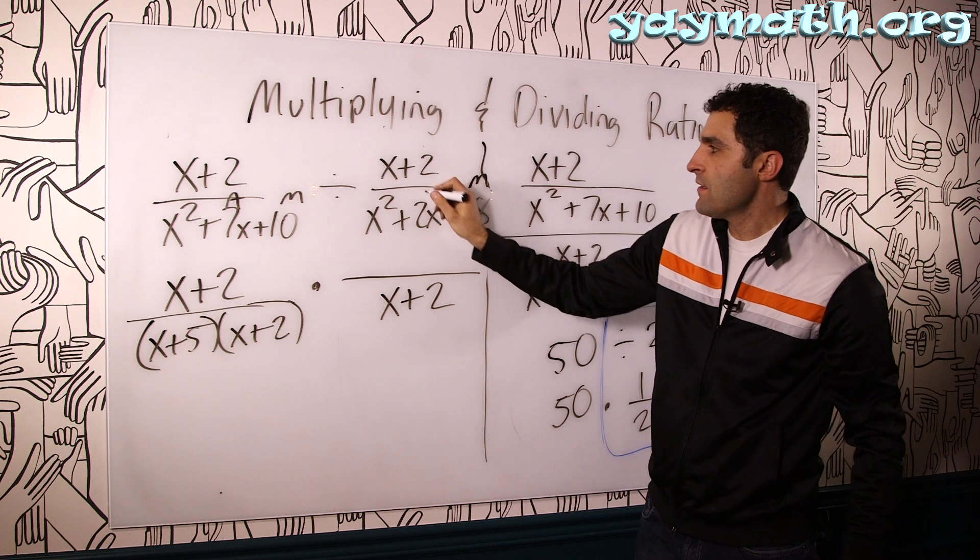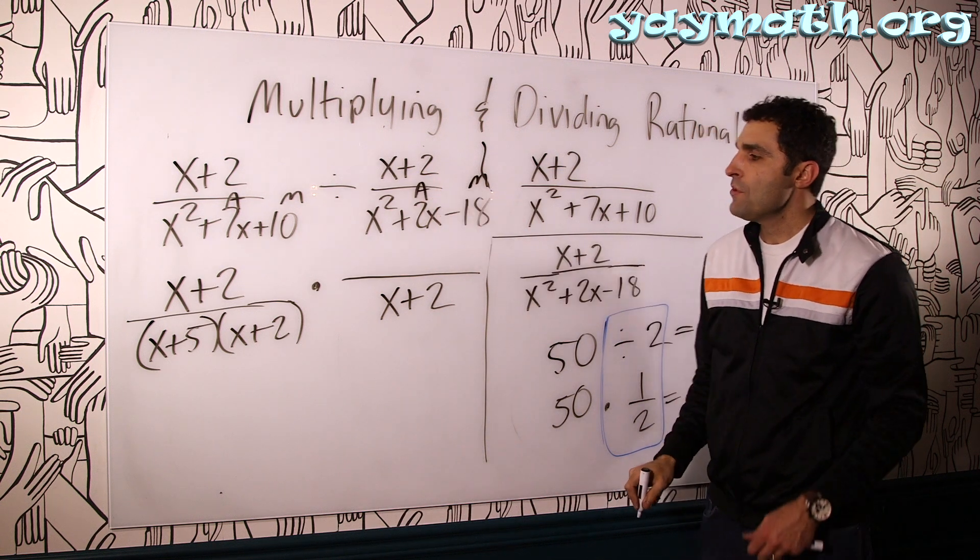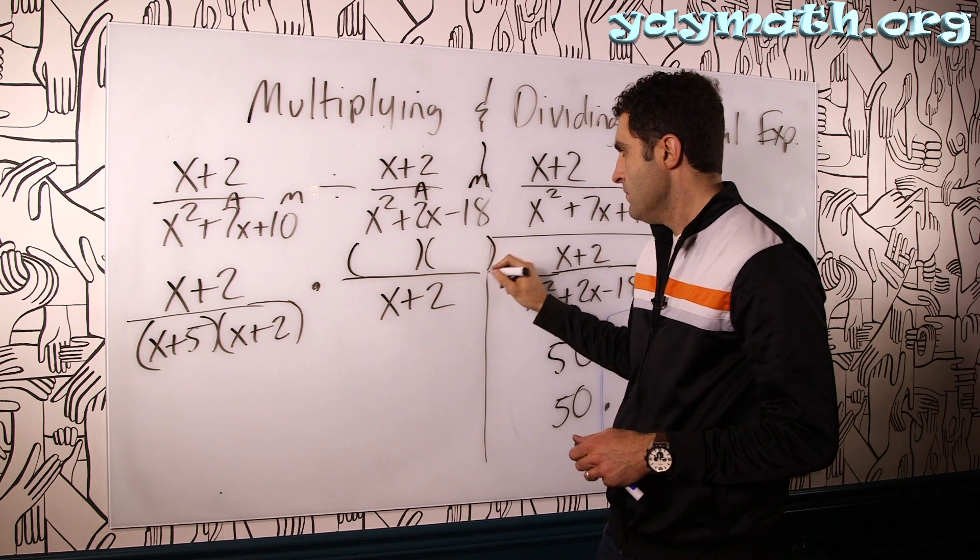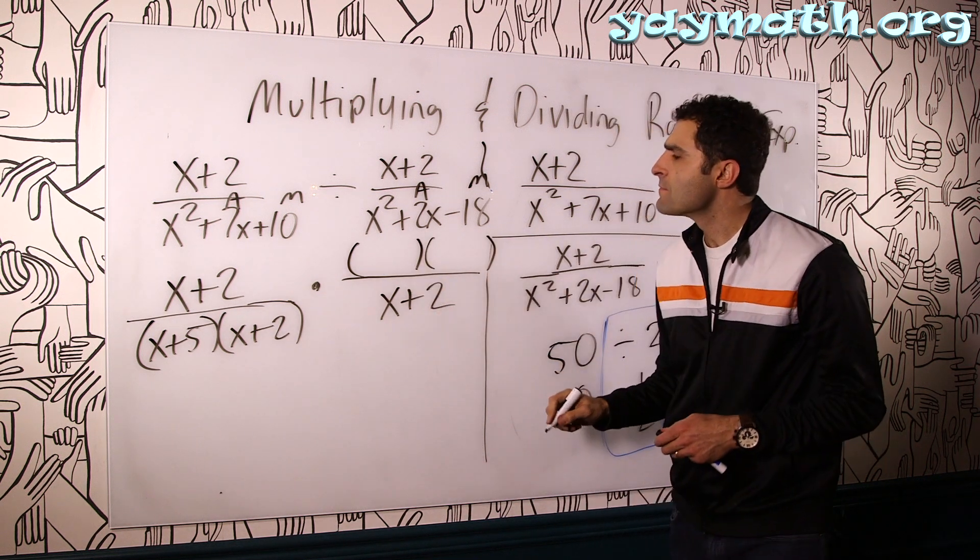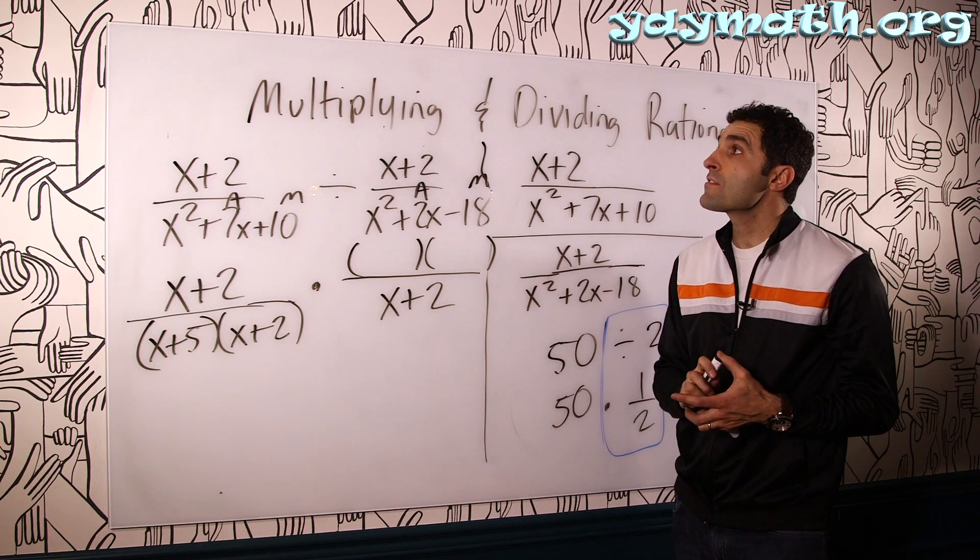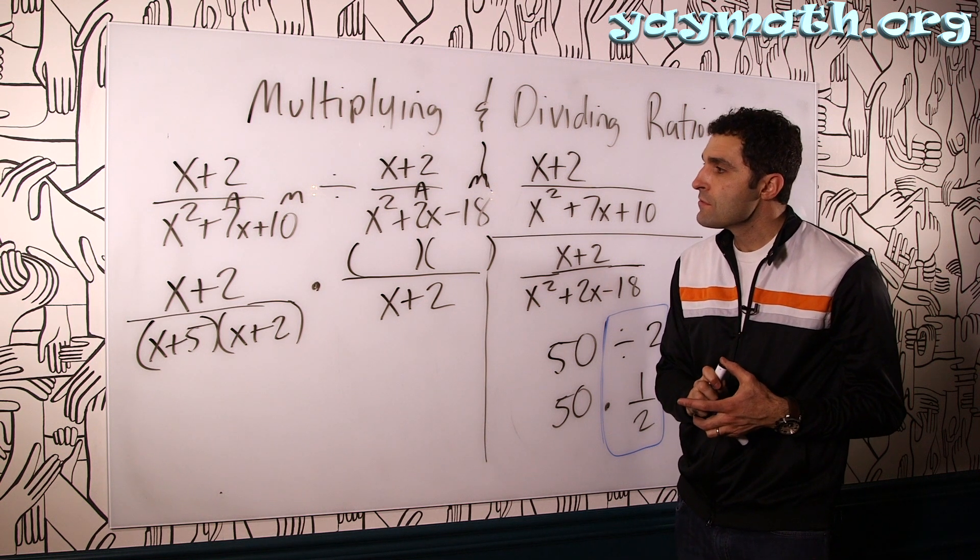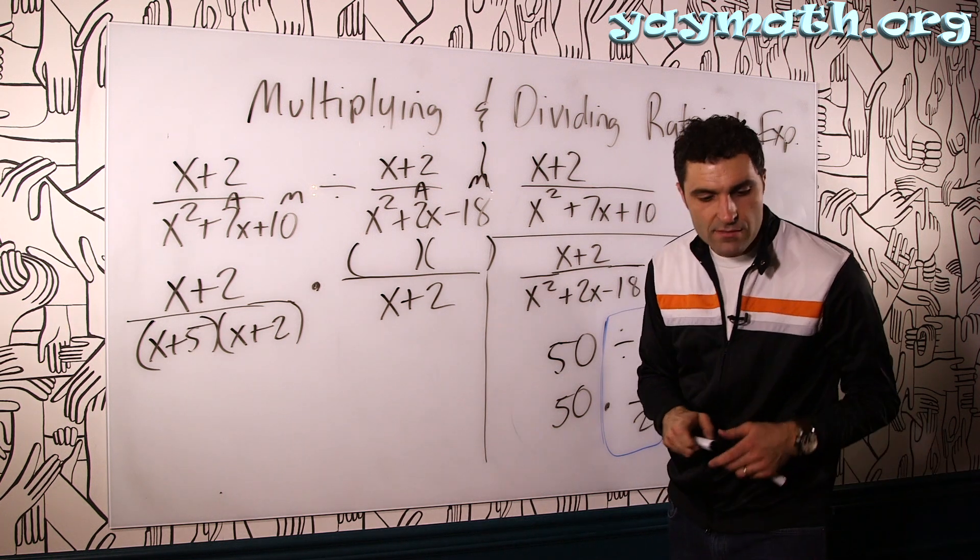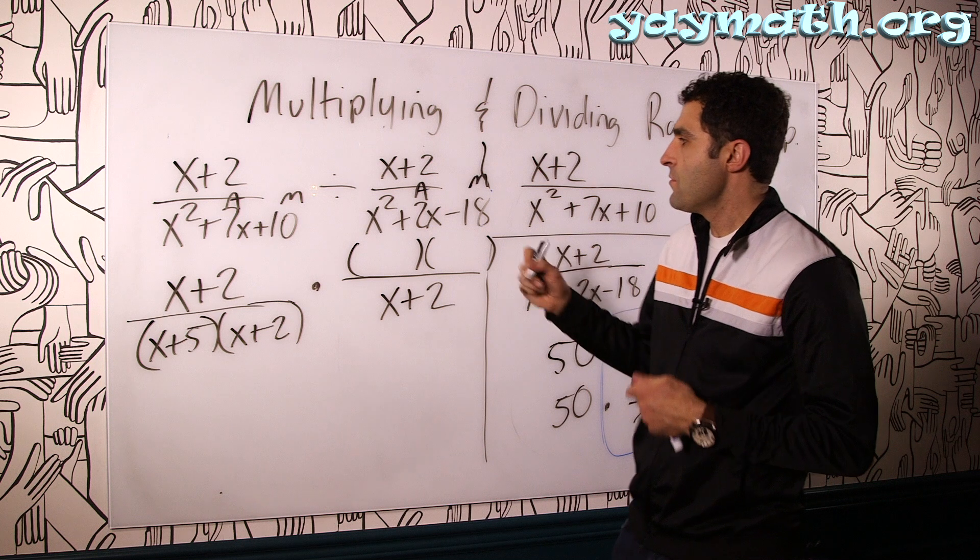Let's factor this and move it to the top. Multiply to negative 18 and add to 2. That's 9 and 2. Let's find which one's positive, negative. 9 and 2, 6, 3. Does that even factor? No? Let's see. Minus 18. No, okay. So let's change it to 7.